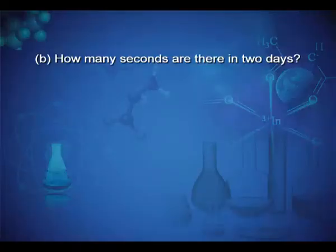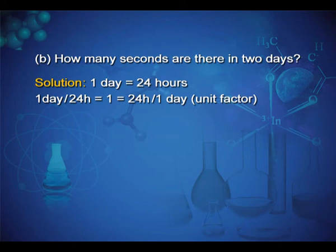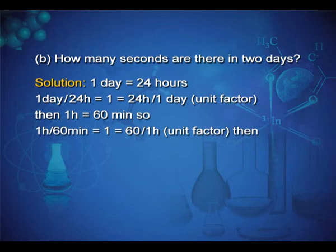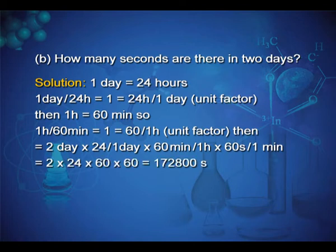Second example: how many seconds are there in 2 days? As we know, 1 day equals 24 hours, so 24/1 day is a unit factor. Then 1 hour equals 60 minutes, so 60/1 hour is a unit factor. Then 2 days × 24/1 day × 60 minutes/1 hour × 60 seconds/1 minute equals 2 × 24 × 60 × 60 = 172,800 seconds.